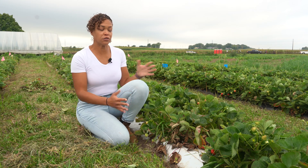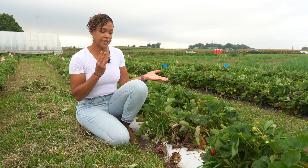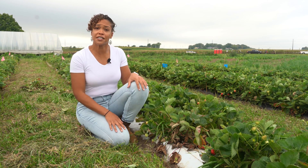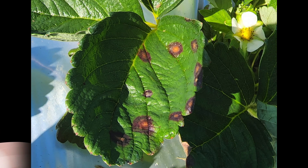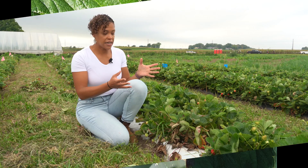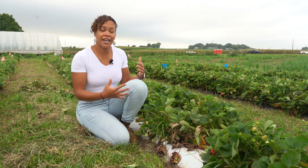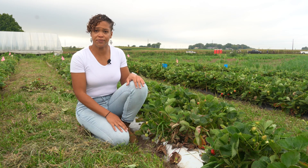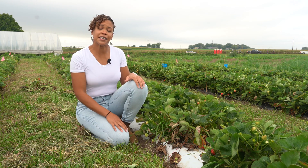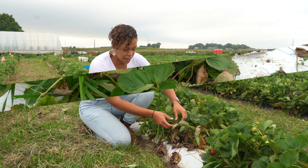Leaf spots are another common disease we encounter in day-neutral strawberry production, and there are three we typically see. The first is common leaf spot of strawberry, characterized by purple lesions with tan centers. This pathogen is typically only a cosmetic issue, but if not managed, it can actually start to reduce plant vigor.